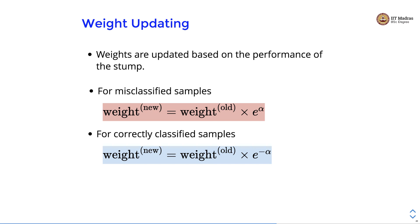In this video we discussed about boosting, which trains different classifiers on the same data and then combines the weak learners to make a strong learner. We studied two types of boosting: AdaBoost and gradient boosting.